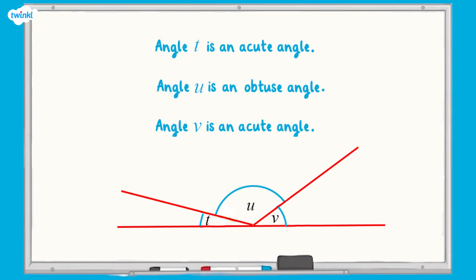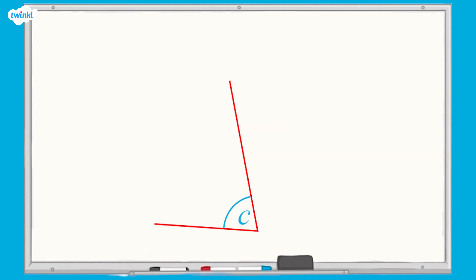All decided? Let's have a look at the answers. Angle T is an acute angle. Angle U is an obtuse angle. Angle V is an acute angle. Now let's use the protractor to help us measure the angles accurately.